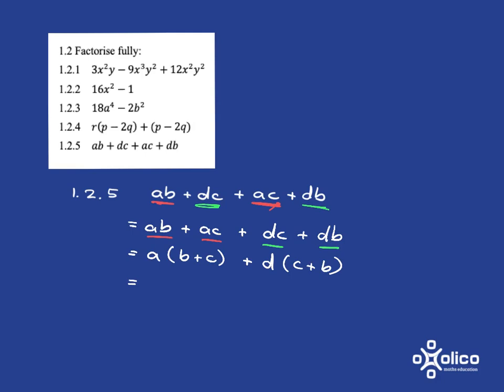Now, b plus c and c plus b are exactly the same thing. So, what I've got here is a, b plus c, and d, b plus c. And now, just like the previous one, I've got a common factor. It's just a very funny-looking common factor, b plus c, but I can pull that out. So, I pull out my b plus c, that funny common factor. What am I left with from the first thing? Well, an a. What am I left with from the second term? A d, and I factorised completely.